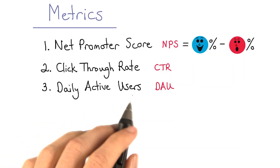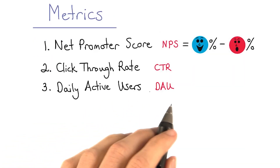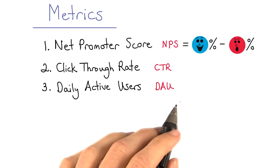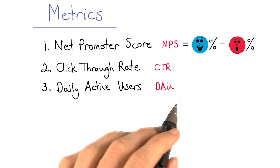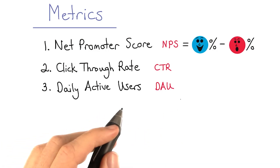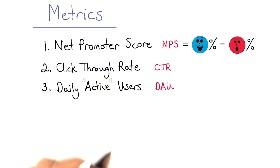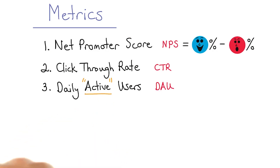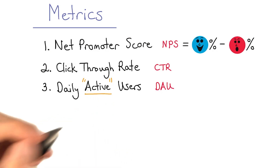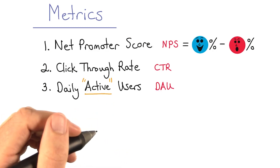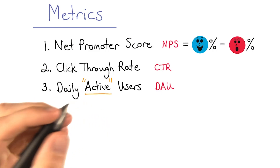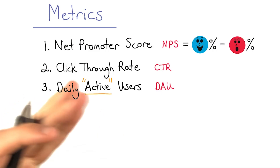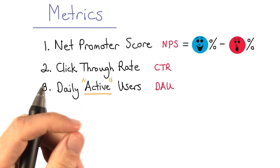Daily active users, or DAU, is another common metric, and it can take on multiple meanings. The trickiest part is defining what active means for your product. It could be as simple as logging in, performing specific tasks, or making a purchase, depending on your business.